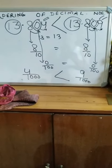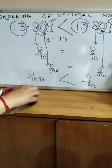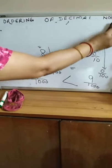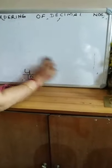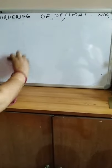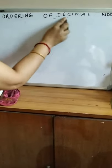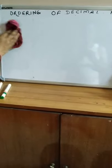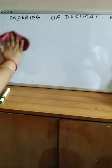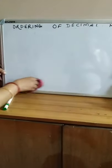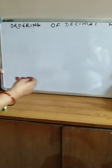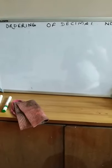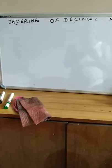Always keep in mind while ordering decimal numbers — when comparing or arranging in ascending or descending order: firstly compare the whole number part. When the whole number part is equal, move to the tenths place. If the tenths place is equal, move to the hundredths place. If the hundredths place is equal, move to the thousandths place. In this way we move on and on.